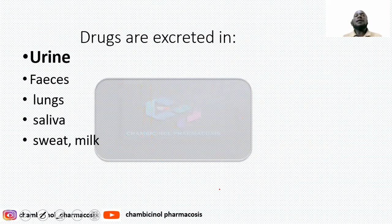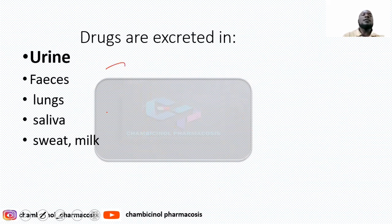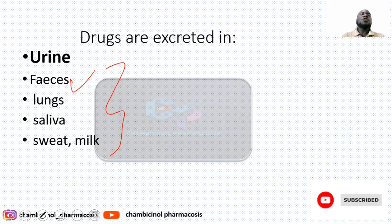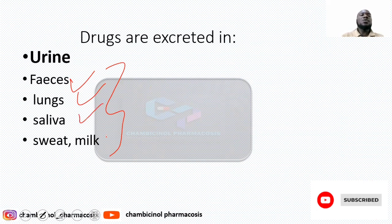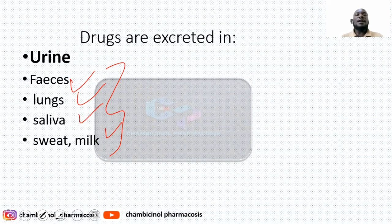We are focusing on the different organs responsible for excretion, but the major organ is the kidney. We also have other minor organs called extra-renal excretory organs. These include the GIT — the drug is excreted with the feces — also the lungs, saliva, sweat, and milk. These minor organs excrete only a small amount of the drug; the majority is excreted via the kidney.